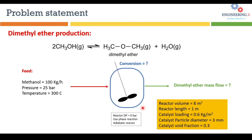We'll learn these two aspects by solving a problem: the production of dimethyl ether. The chemical reaction involves dehydration of methanol to produce dimethyl ether with evolution of water in gas phase. Dimethyl ether is a biofuel obtained from dehydration of methanol in the presence of catalysts such as gamma alumina. The feed consists of pure methanol entering a plug flow reactor at 100 kg per hour, 25 bar pressure, 300°C temperature, operating in adiabatic mode with gas phase reaction.